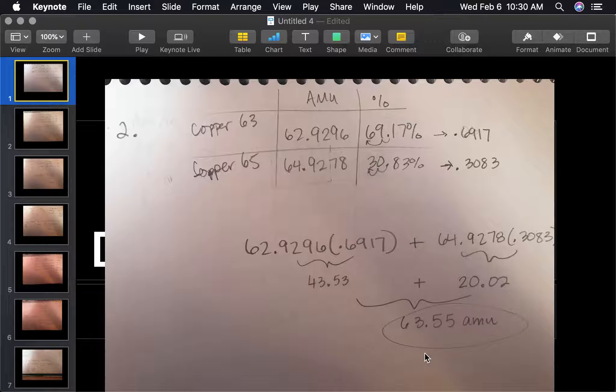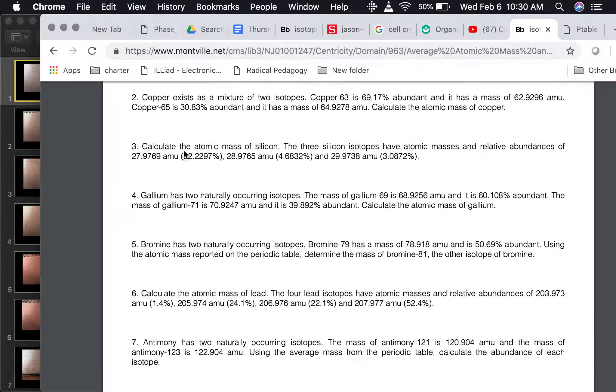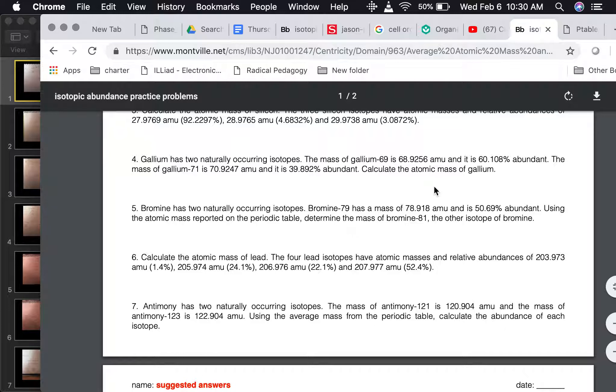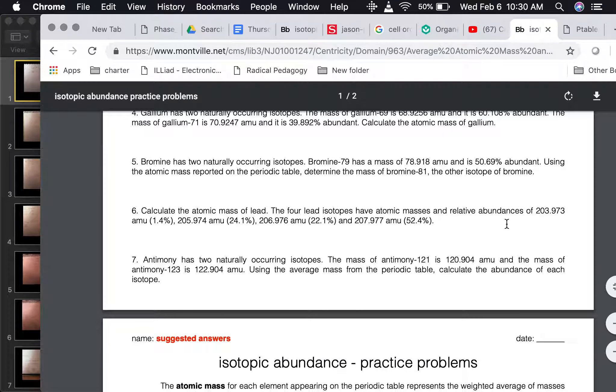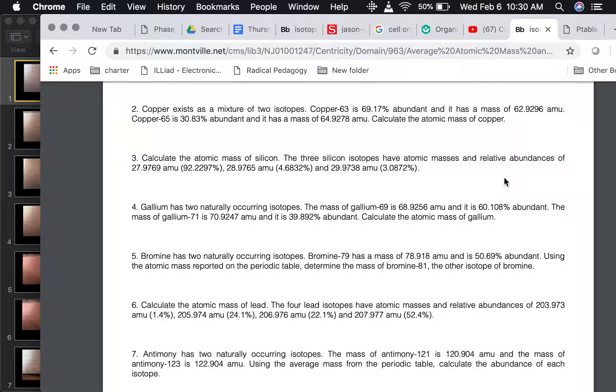If the answer is a little bit off, that's okay. It might be around the decimals. Just make sure you are really showing your work like this, because that shows me you understand the process. Now if we look at number three, calculate the atomic mass of silicon. The three silicon isotopes have atomic masses and relative abundance of 97.9169, and here's the abundance. So here's all our information.